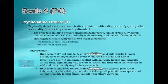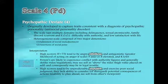Scale four is psychopathic deviant. When we see this scale elevated, especially much greater than a standard deviation and a half, we're starting to think of things like antisocial personality disorder, people with some severe symptomatology — especially if it's elevated alongside other scales like scale eight and scale nine.